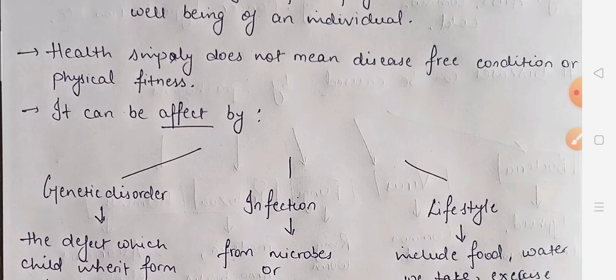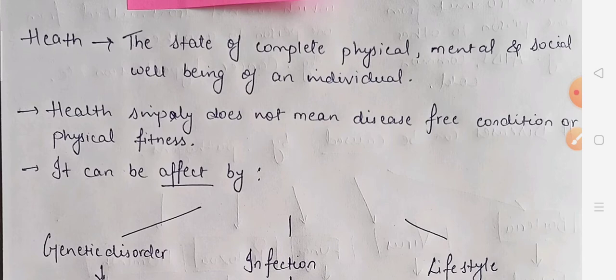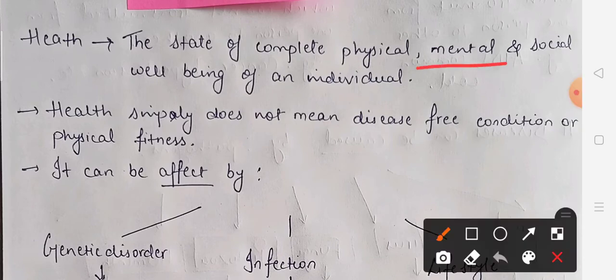For example, if a person has no disease but has a lot of pressure or depression, then we cannot say that person is healthy. So only when a person is physically, mentally, and socially right, then we can say that person is healthy.